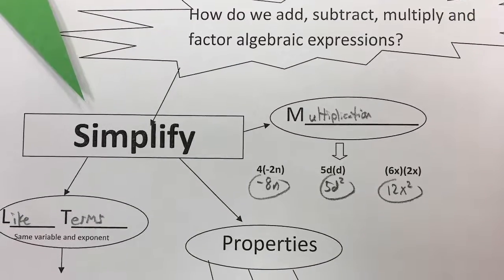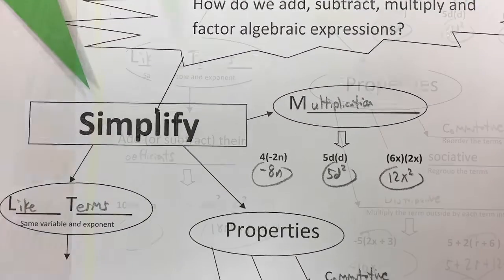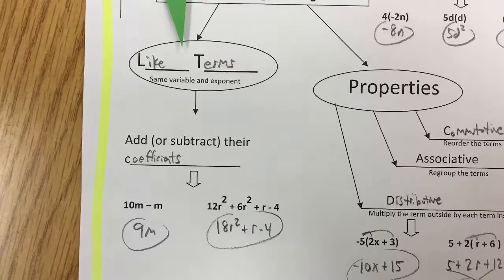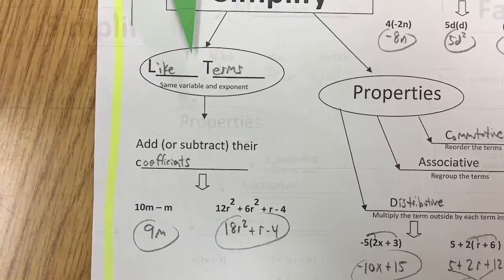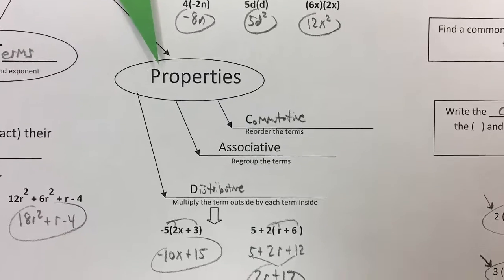So one thing we do with algebraic expressions is look to simplify them. You can look for like terms. If you find like terms, you want to look at their coefficients and either add them or subtract them.